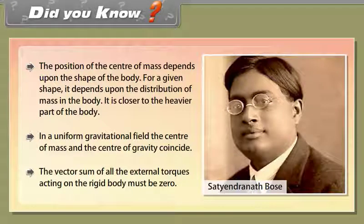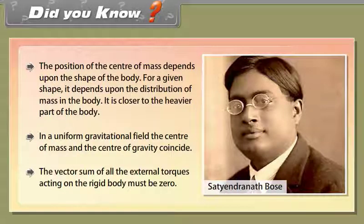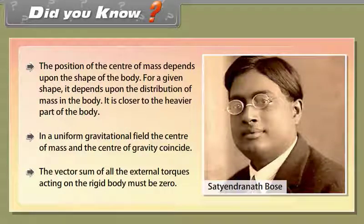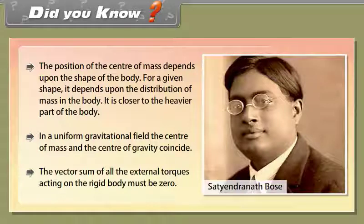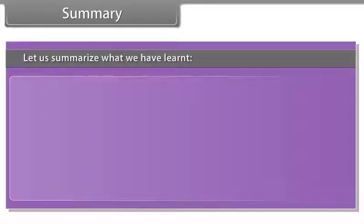Did you know? The position of the center of mass depends upon the shape of the body. For a given shape, it depends upon the distribution of mass — it is closer to the heavier part. In a uniform gravitational field, the center of mass and the center of gravity coincide. The vector sum of all external torques acting on a rigid body must be zero for equilibrium.